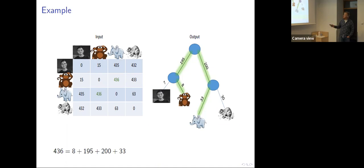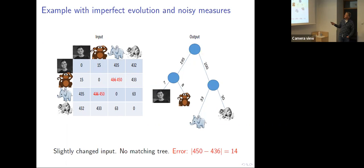This is the ideal situation. But evolution is not perfect and we have noisy measures. Even though this was the evolution that happened — not with the edge weights but just the branching process — it turns out that some distances are not quite what we would have liked. There is no matching tree because of the four-point condition. If you have a perfect match on four points and you change just one entry, that cannot be a perfect match. So it's easy to see you can't do it.